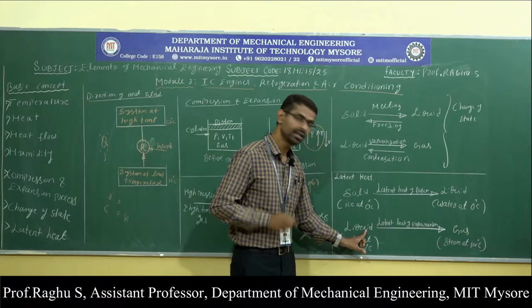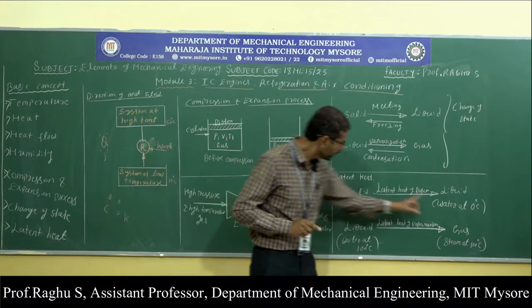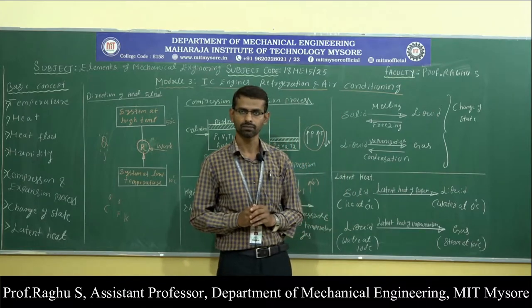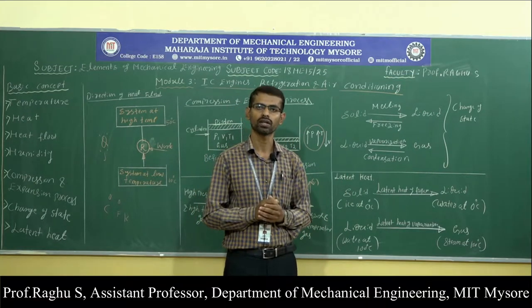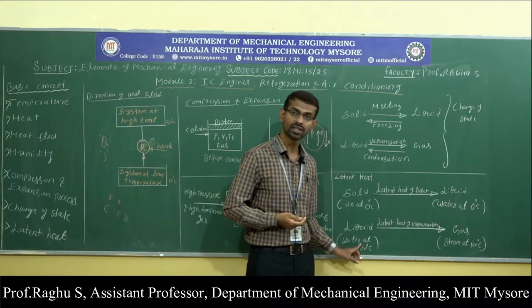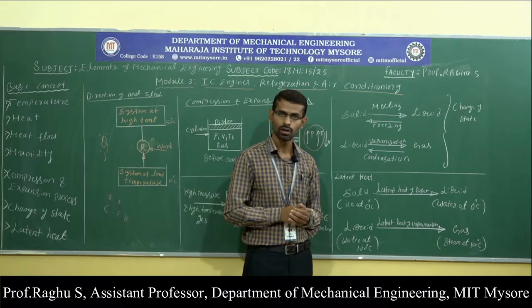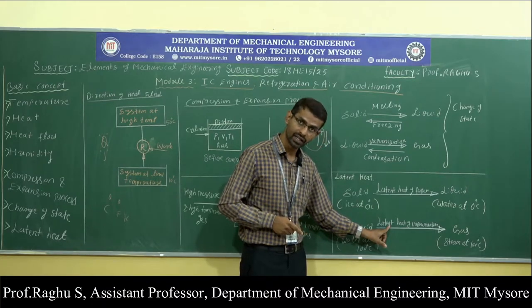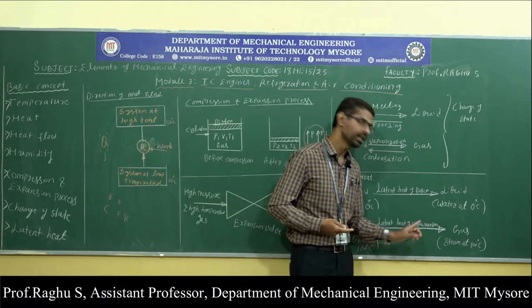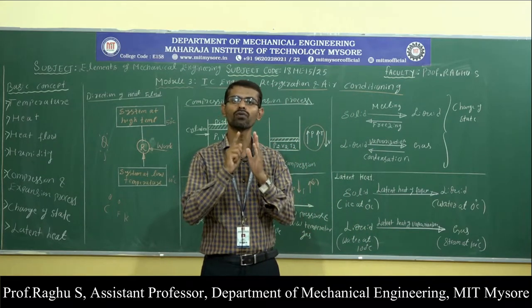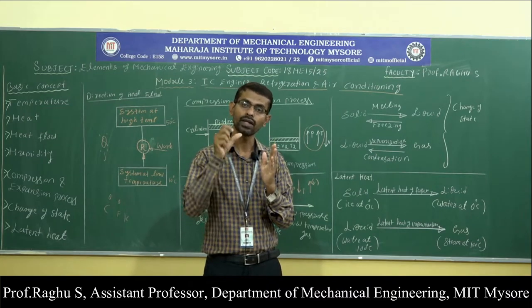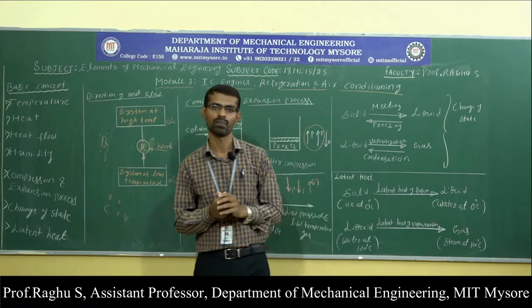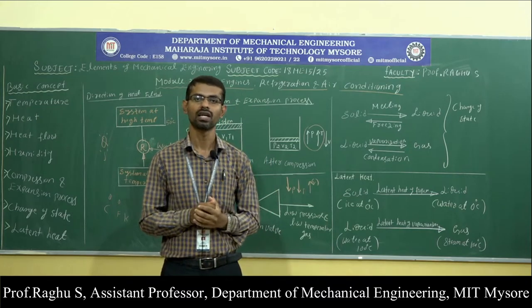Similarly, the amount of heat required to convert liquid into gas without changing temperature is called as latent heat of vaporization. For example, when water reaches 100 degree centigrade and is converted into steam, the amount of heat required to convert water at 100 degree centigrade to steam is called as latent heat of vaporization.